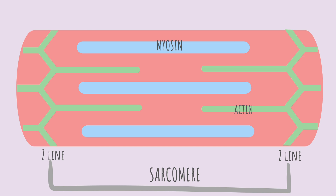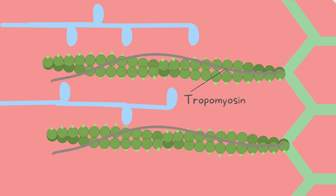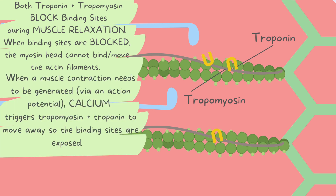The myosin and actin sliding against each other creates a muscle contraction. Now let's look at some factors that involve muscle relaxation. These two factors are proteins called tropomyosin and troponin. Both troponin and tropomyosin block binding sites during muscle relaxation. When binding sites are blocked, the myosin heads cannot bind or move the actin filaments, so no muscle contraction can take place. When a muscle contraction needs to be generated, calcium triggers tropomyosin and troponin to move out of the way, exposing the binding sites.